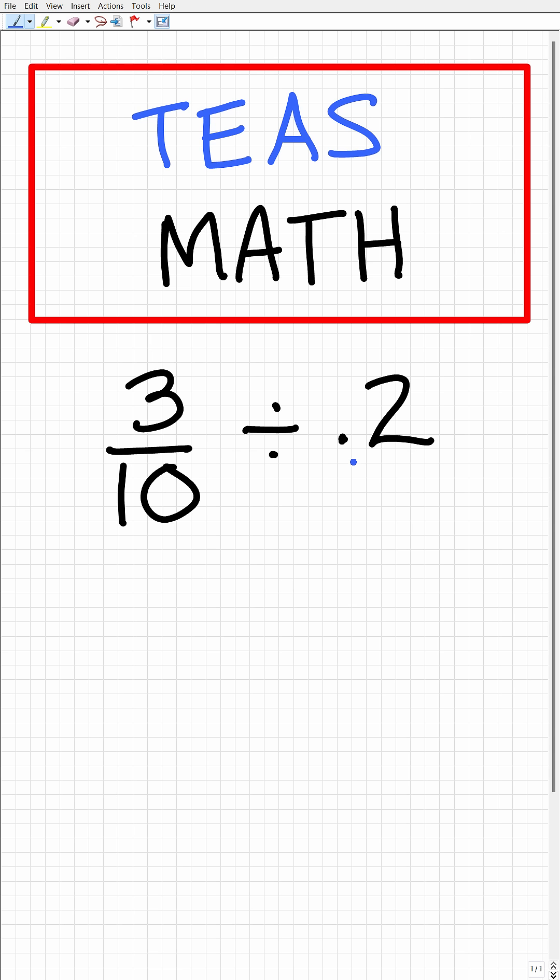All right, so how do we convert a decimal into a fraction? Well, basically it's how we say this decimal. So you can say this decimal as 0.2, or you can say it as the decimal 2 tenths, because the 2 right here is in the tenths place. So if you say this using its place value, you can actually listen and construct the fraction, because this is the decimal 2 tenths, or the fraction 2 tenths.